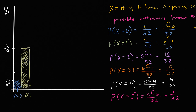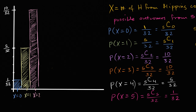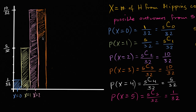Now we have the probability x equals two, which is 10/32. So that bar is going to look like this — up to 10/32. And the probability that x equals three is also 10/32. Let me draw that — this is also 10/32. Let me shade this in.